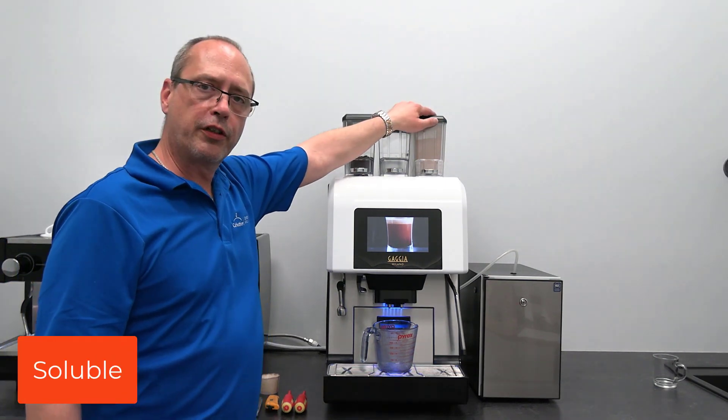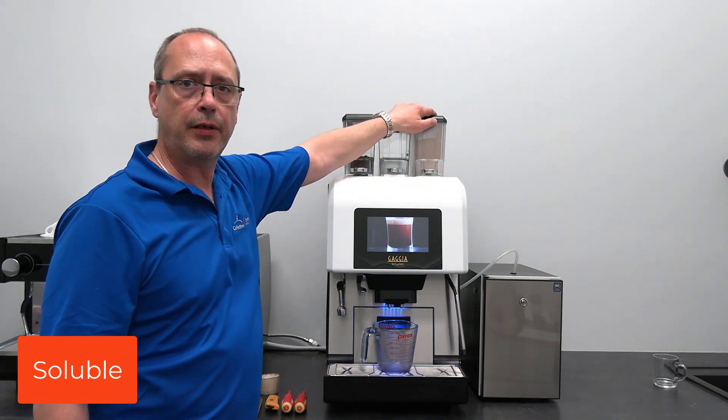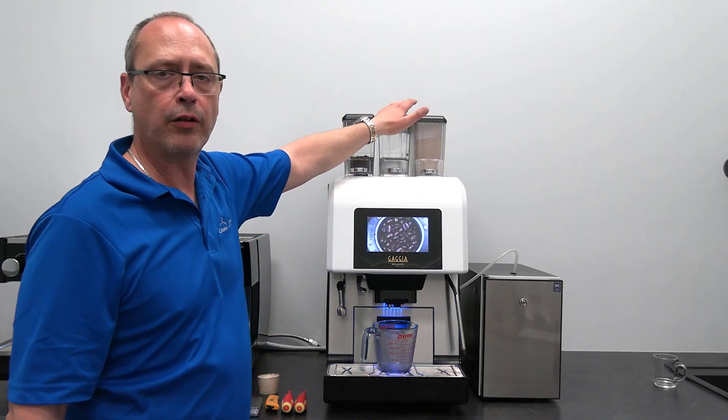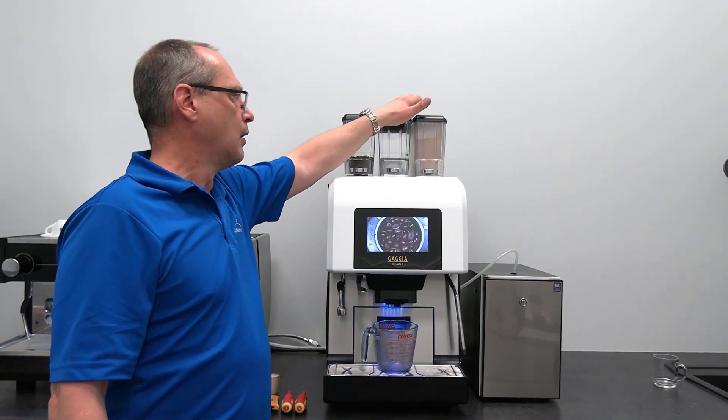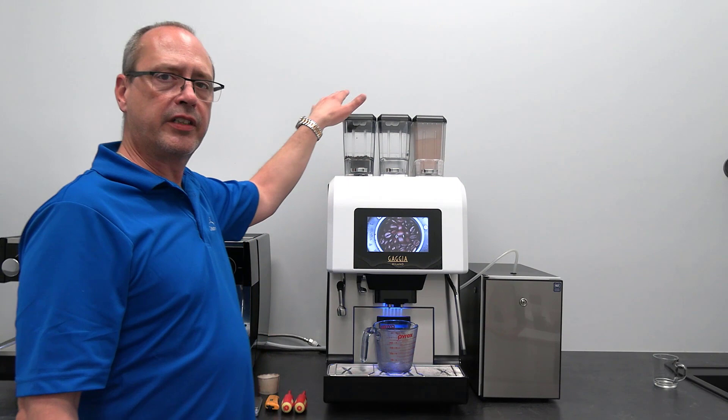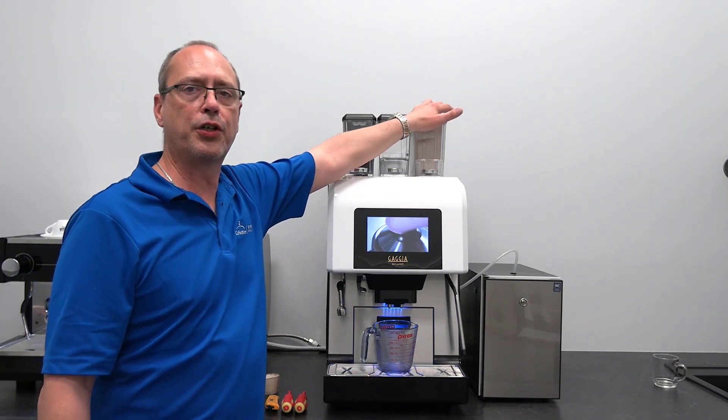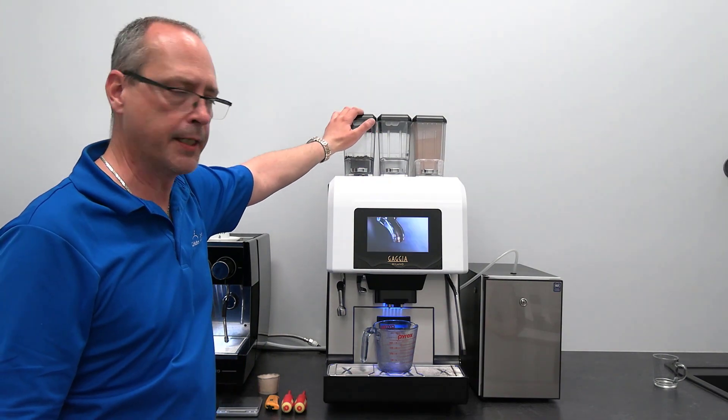A good quality product for the soluble or chocolate canister usually runs around four bucks a pound. The turnaround time for the bean hoppers and the soluble canisters—you should go through the whole canister within a week.